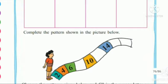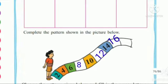Complete the pattern shown in the picture below. Numbers given: 2, 4, 6, then blank, 10, blank, 14, blank, blank. By adding 2 each time: 2, 4, 6, 8, 10, 12, 14, 16, 18. We have completed the pattern shown in the picture by adding 2 each time.